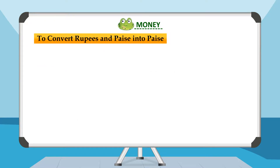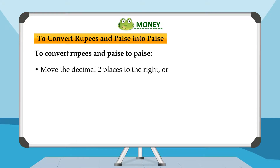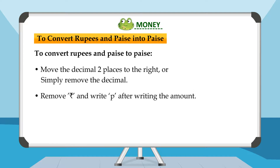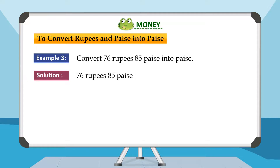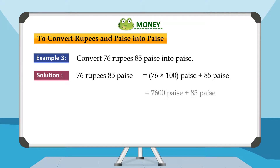To convert rupees and paise into paise: move the decimal two places to the right, or simply remove the decimal. Remove the rupee symbol and write paise after the amount. Example 3: Convert 76 rupees 85 paise into paise. Solution: 76 rupees 85 paise equals 76 into 100 paise plus 85 paise, which equals 7600 paise plus 85 paise, which equals 7685 paise.